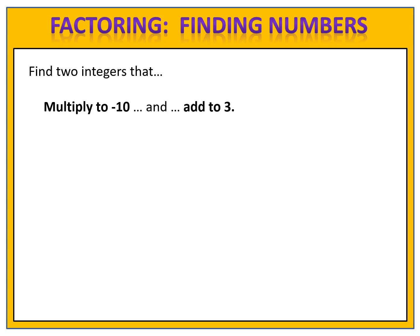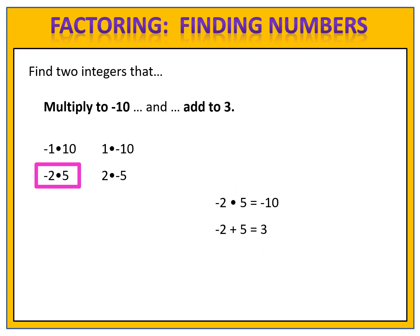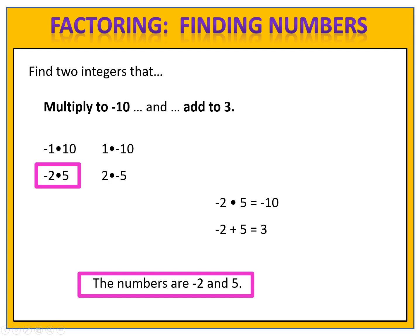Can you find two integers that multiply to negative 10 and add to positive 3? Pause the video. Possible candidates are negative 1 times 10, 1 times negative 10, negative 2 times 5, or 2 times negative 5. If you used the graphing calculator, you'd enter negative 10 divided by x and make your list. We're looking for the pair that adds to positive 3: that's negative 2 and 5. Verify: negative 2 times 5 is negative 10, and negative 2 plus 5 is positive 3. The numbers are negative 2 and 5.